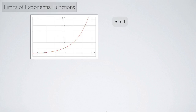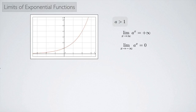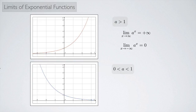For the case where a is greater than 1, the limit as x approaches infinity of a to the x is positive infinity — the function just keeps growing. On the other hand, as x approaches negative infinity, it approaches 0, getting closer to the x-axis. For the case where a is between 0 and 1, the limit as x approaches infinity is 0, and as x approaches negative infinity the limit is positive infinity — the opposite behavior.